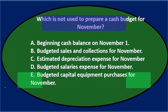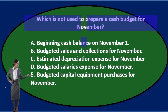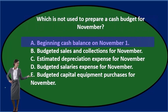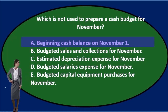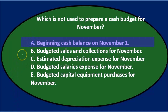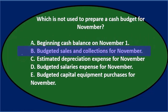Which is not used to prepare a cash budget for November? A — beginning cash balance on November 1st: if we're preparing a cash budget we have to start somewhere. We're not starting at zero typically unless it's the first month of budgeting; we're starting at the beginning balance as of November 1st, so we would need that. B — budgeted sales and collections for November: we're going to need cash coming in, so we would need that too.